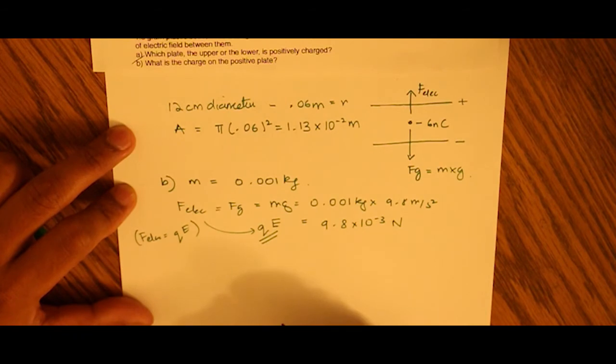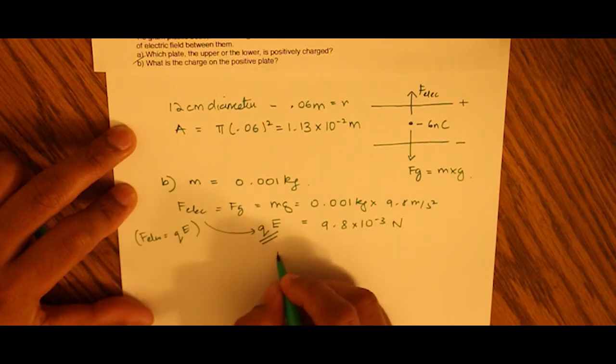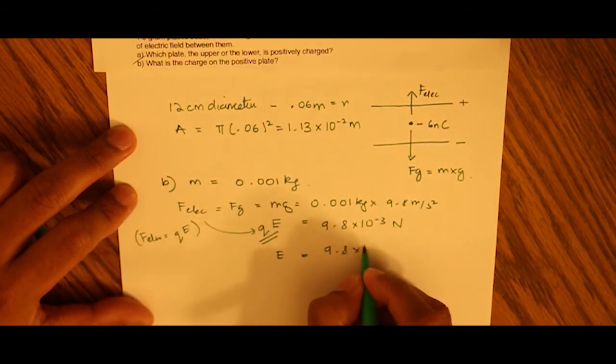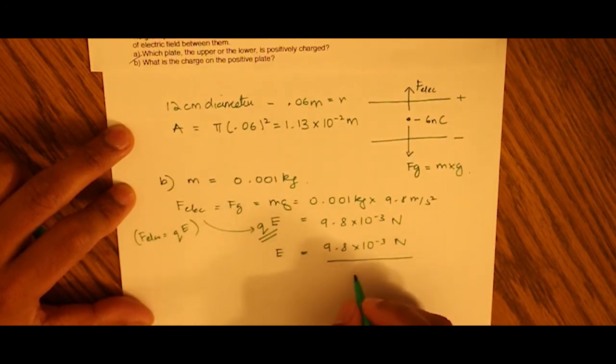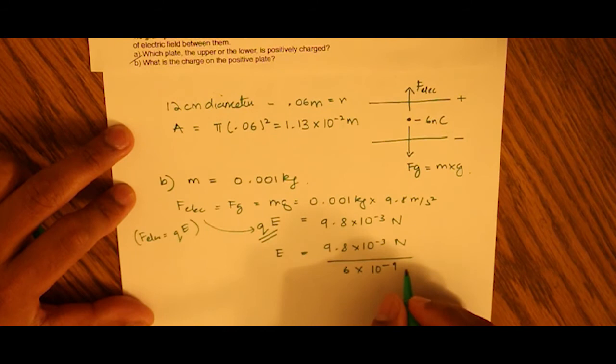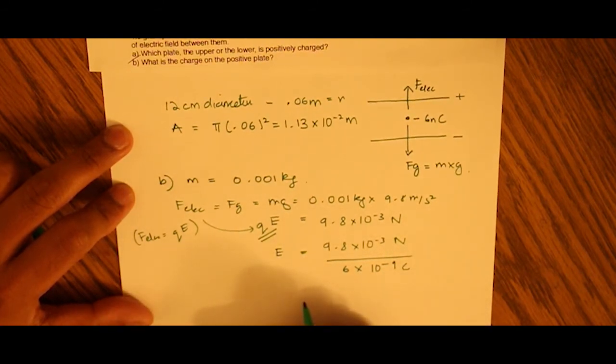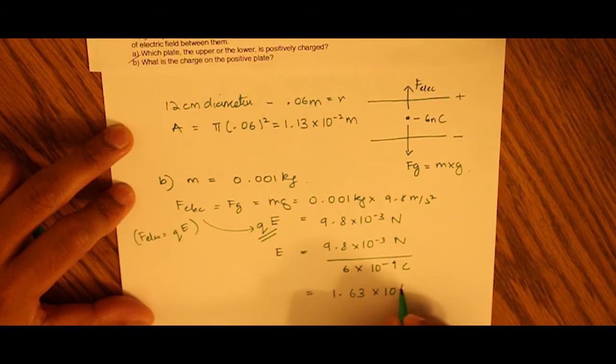And so now we have this. And we know that the charge is given to us as a negative 6 nanocoulomb. So our electric field E equals 9.8 times 10 to the negative 3 newtons divided by our charge, our point charge, which is 6 times 10 to the negative 9 coulombs. So once we calculate this, we end up with a value of our electric field as 1.63 times 10 to the 6 newtons per coulomb. That's the value of the electric field.